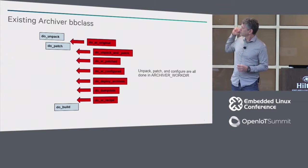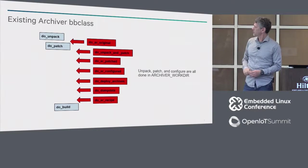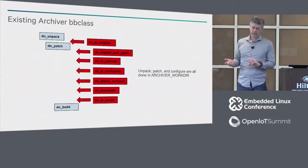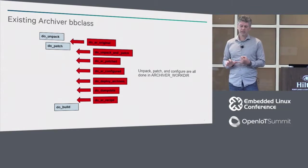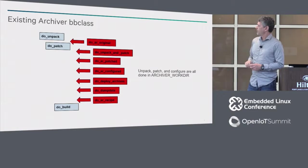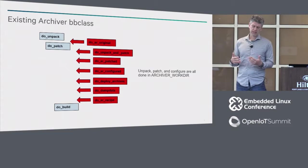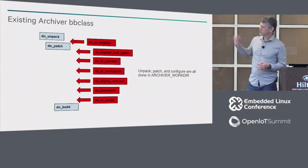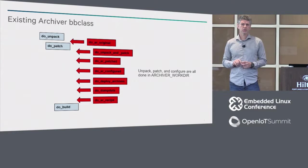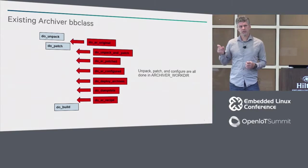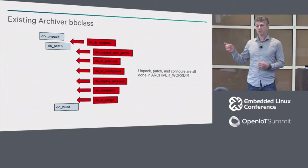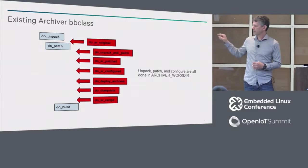After the unpack stage, it archives all the original code before patching. Then at the patch stage, it adds steps to unpack and patch the source code. It has different ways to bundle it — save everything as original source plus patches, save just the patched source, or save the configured source. In the deploy archives, it will put these saved packages and generate a source package. Nicely, it also saves the recipes themselves, including the recipe, any include files, and anything else pulled in during creation of the package.